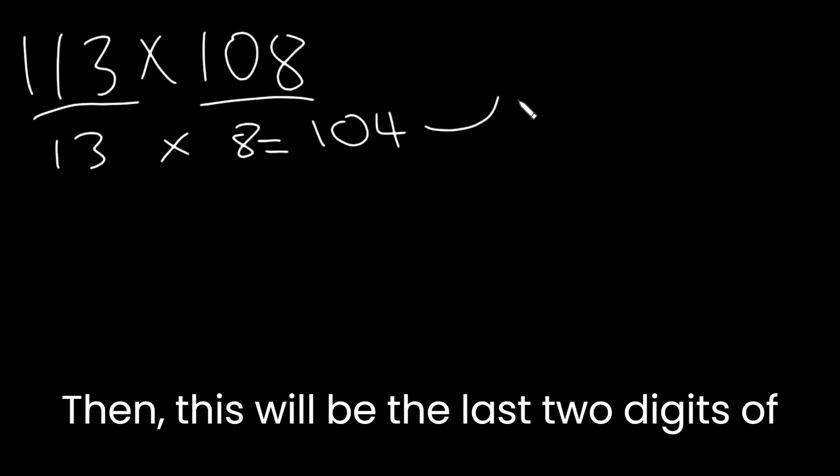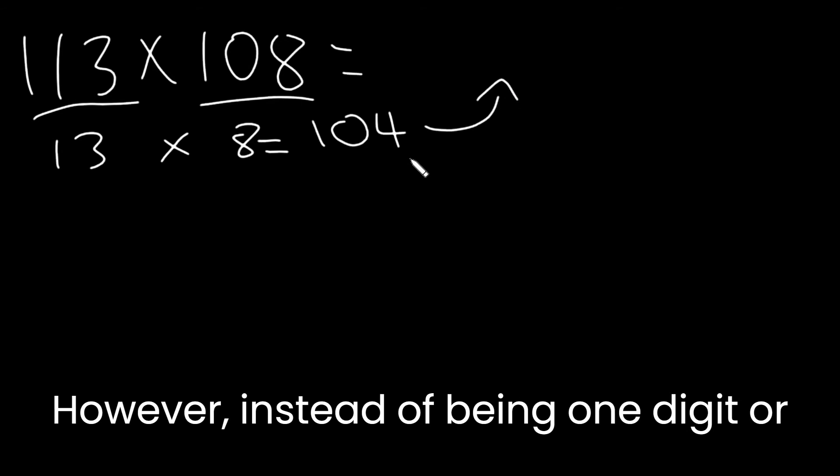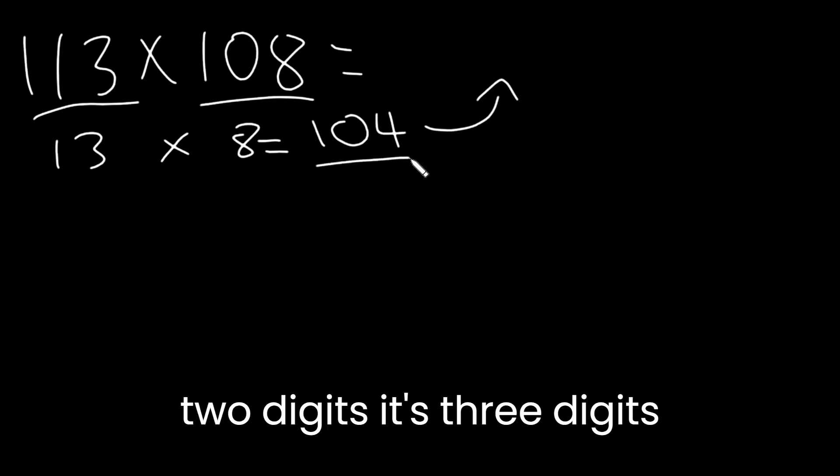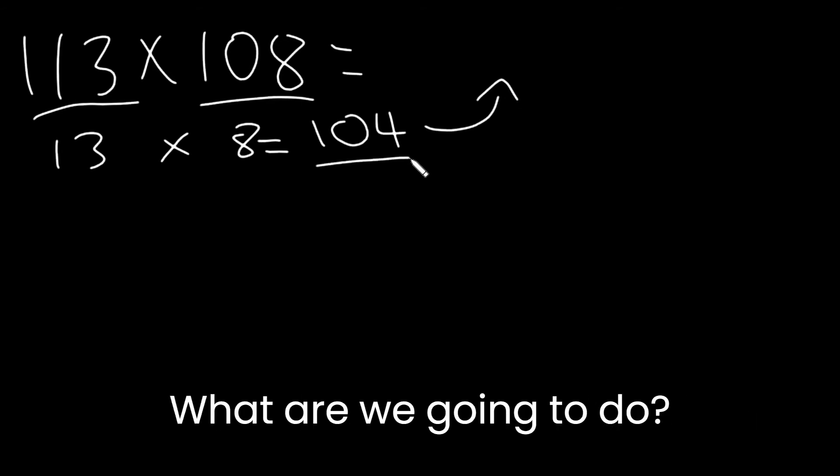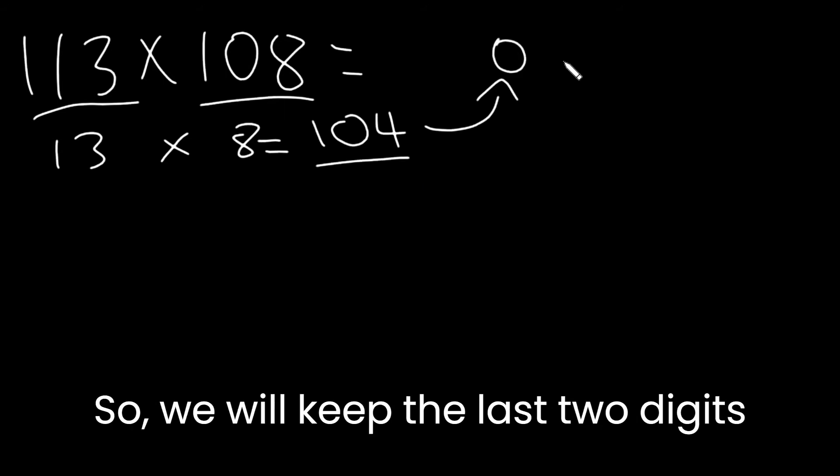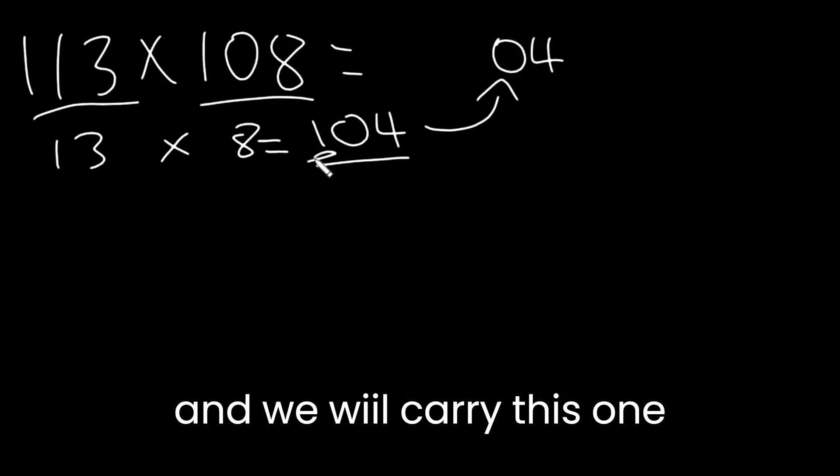Then this will be the last two digits. However, instead of being one digit or two digits, it's three digits. What are we going to do? So we're going to keep the last two digits and we will carry this one.